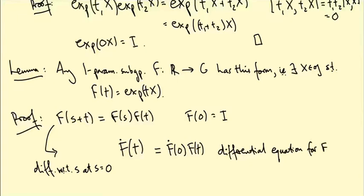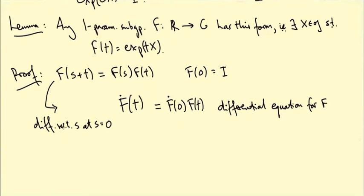And this first guy is an initial condition: F(0) is the identity. So there's a theorem called the existence and uniqueness theorem for ordinary differential equations that says a differential equation of this form has a solution. And if I specify the initial condition, that specifies the solution uniquely. So this ODE has a unique solution by general theory of ordinary differential equations.